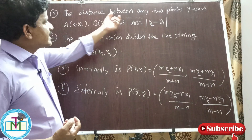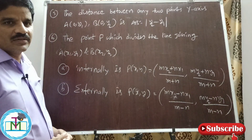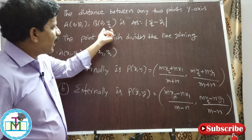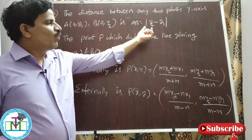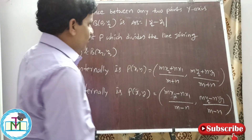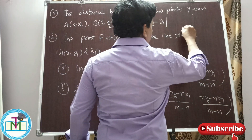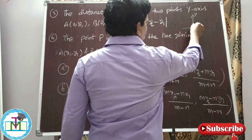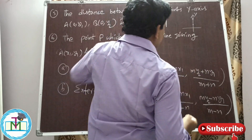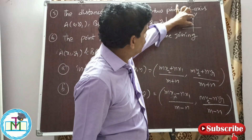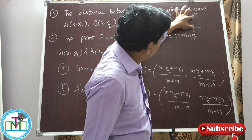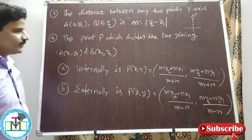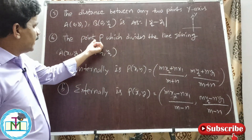Point number five: the distance between any two points A(0, y1) and B(0, y2) on the y-axis. AB is equal to |y2 − y1|. Here on the y-axis, we have a point (0, y1) and a point (0, y2). The distance between them is the total distance minus the smaller distance, giving y2 minus y1.